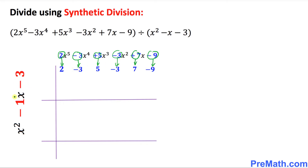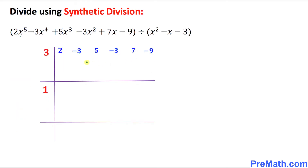Now let's focus on the polynomial on the left-hand side. I want you to focus on this constant part: negative 3. The opposite sign of negative 3 is positive 3, so positive 3 is going to show up in this box on the top. As far as the middle number negative 1 is concerned, we do the same thing — the opposite sign of negative 1 is positive 1, and it goes in the second box. We put down all these coefficients horizontally and vertically before we get started with our synthetic division.